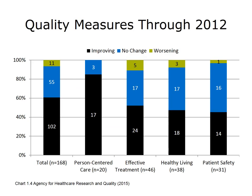The impact of the National Quality Strategy is monitored by data included in the National Health Care Quality and Disparities Report. The 2014 report documents some success with regard to NQS priorities, though areas for improvement remain. This chart shows the number and percent of quality measures tied to the NQS and whether measures improved, remained the same, or worsened between 2001–2002 and 2012. Among 168 measures captured, 102 are improving (about 60%), 55 show no change, and 11 are getting worse.